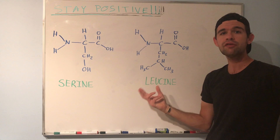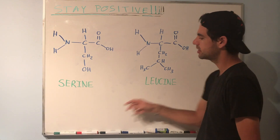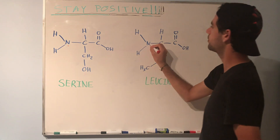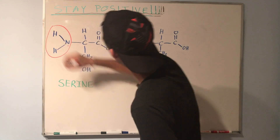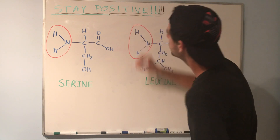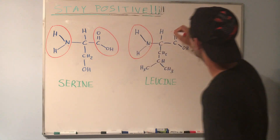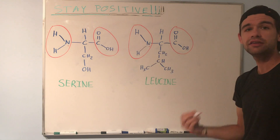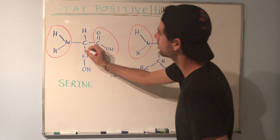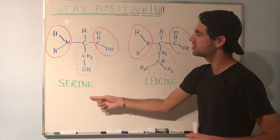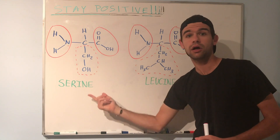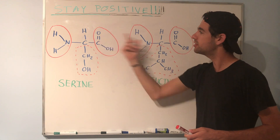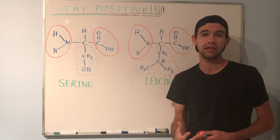Let's look at some examples. Here I've drawn two common amino acids: serine and leucine. Just like we talked about, they share a lot of similarities. We have an amino group here and here, a carboxyl group here and here, our alpha hydrogens and alpha carbons. But notice that they differ in this one region that we called the R group. The R group of serine is a CH2OH — it's an alcohol — whereas the R group of leucine is just made up of hydrocarbons. So despite their many similarities, these two amino acids will behave very differently within a protein.